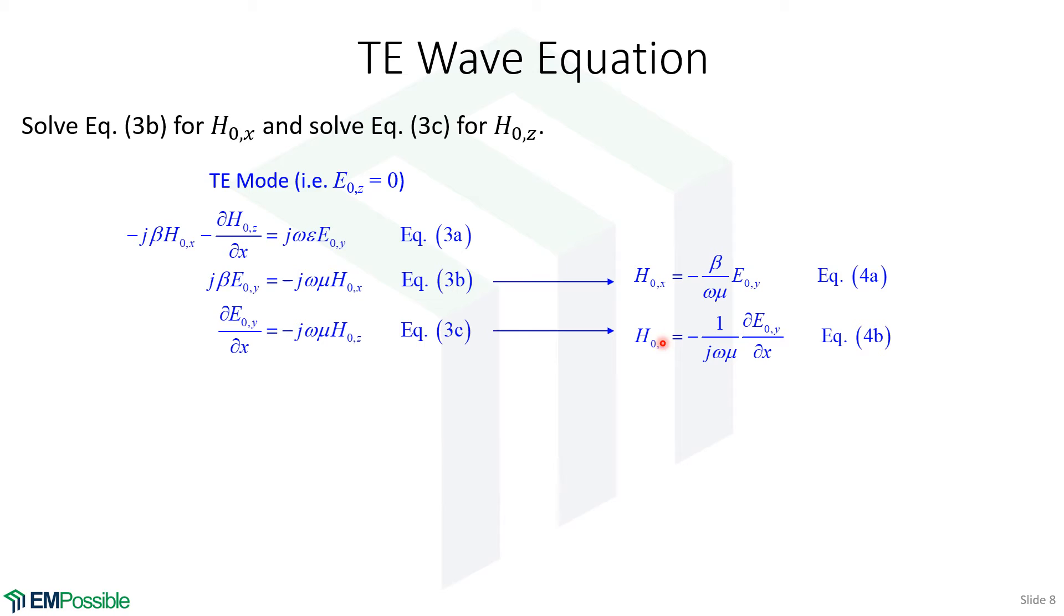The first thing we'll do is solve equations 3B and 3C for H_x and H_z respectively. We basically have solved for the magnetic fields in terms of the electric fields. Now we'll take these expressions and substitute them back into this first equation.